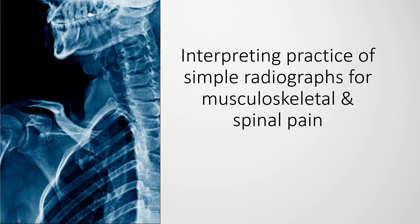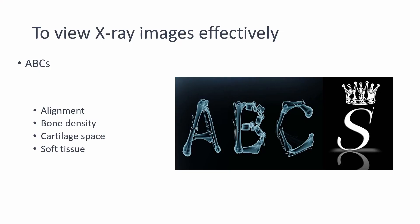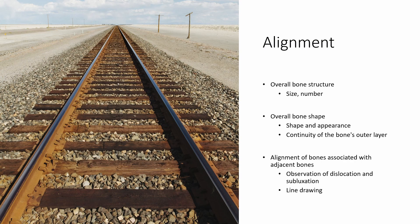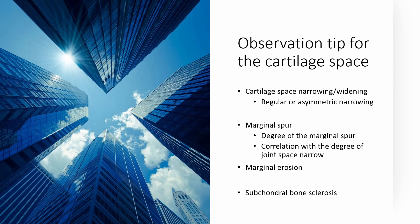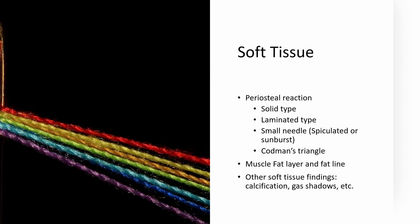Today, we'll dive deep into interpreting a lumbar spine x-ray, leveraging the ABC's rule we've emphasized: alignment, bone density, and cartilage space. If you need a quick refresher on the ABC criteria, don't hesitate to revisit our tutorial videos.